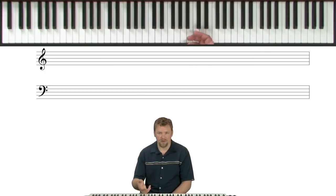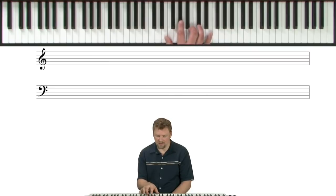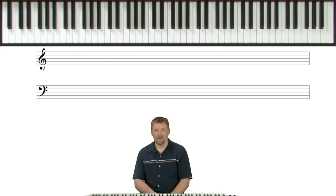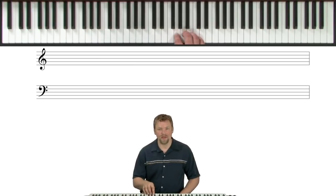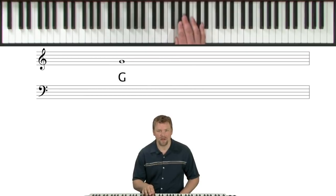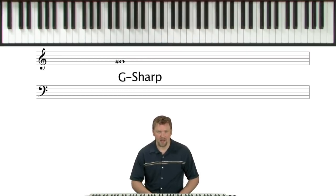How do we show when we want to, say we want to make a G sharp on there? Well, this is what a sharp symbol looks like. So, we would write the note on the G line and we would put that sharp symbol in front of it. And there you have it.